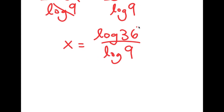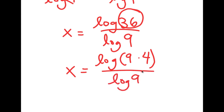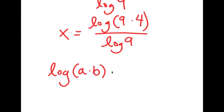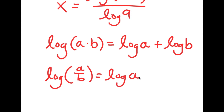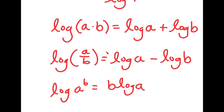Now we want to simplify this as much as we can, so I'm going to rewrite log 36 as log of 9 times 4. There are two more logarithmic properties you should know. The first is that log of a times b is equal to log a plus log b. The second is that log of a over b is equal to log a minus log b. Along with log a to the power of b equals b times log a, these are the three basic logarithmic properties everyone should know.